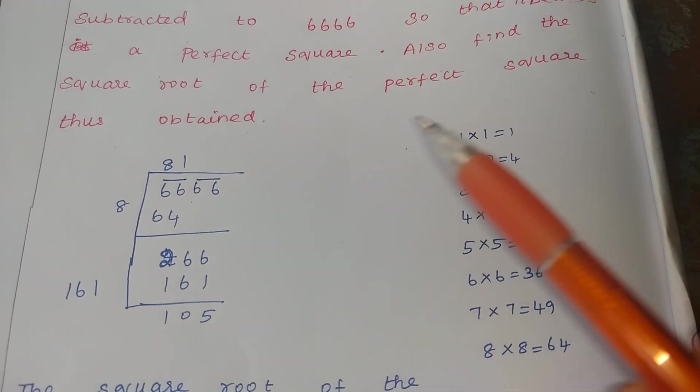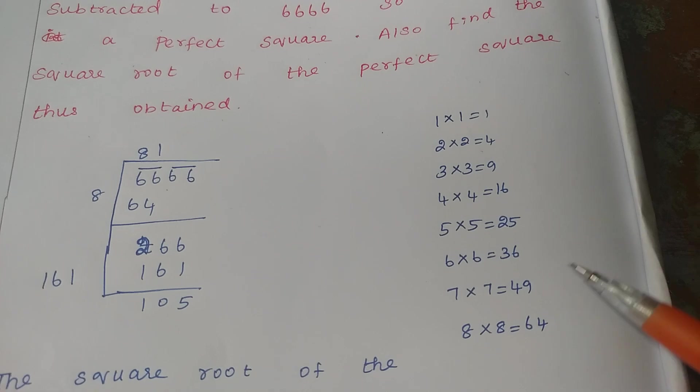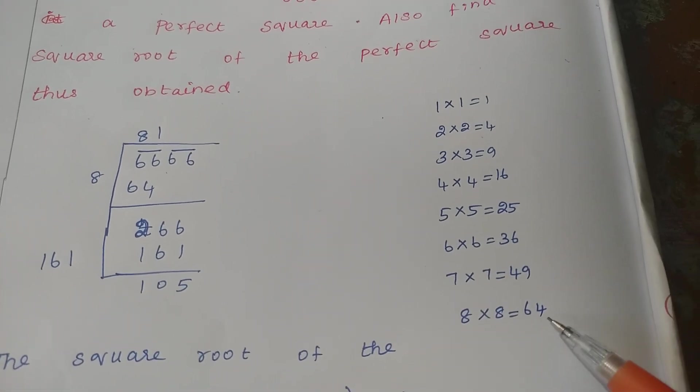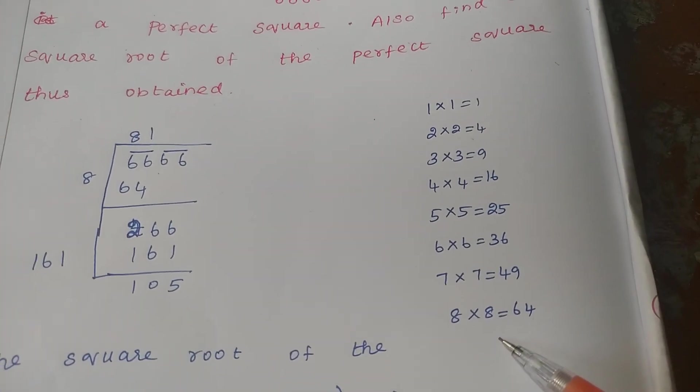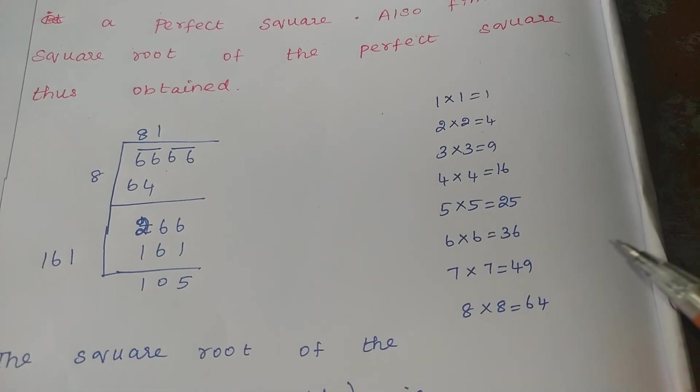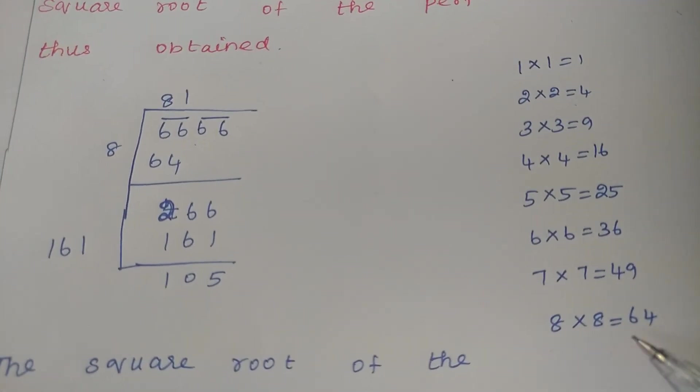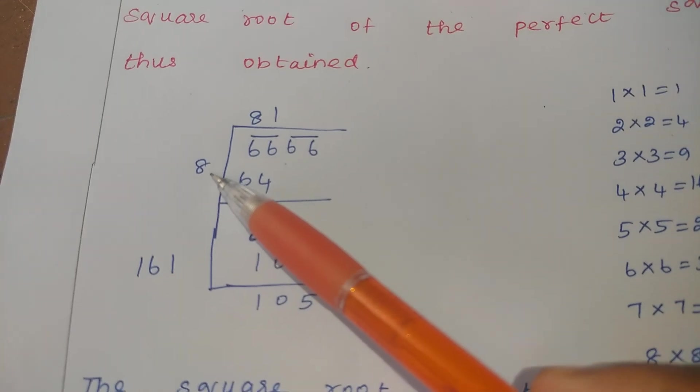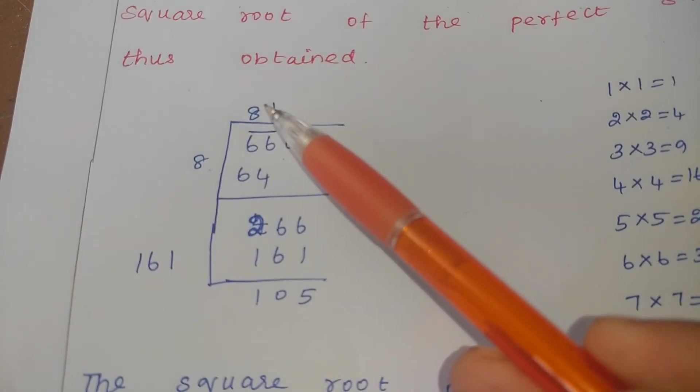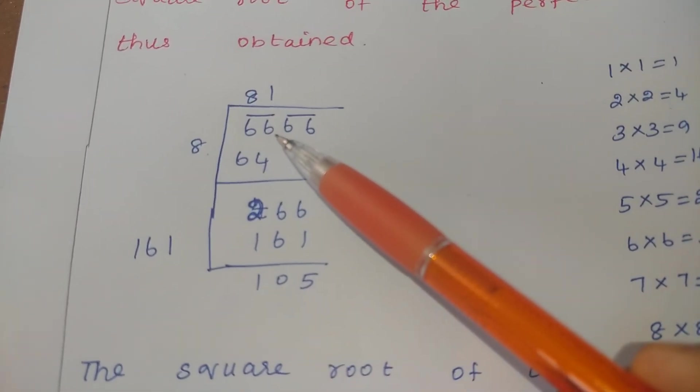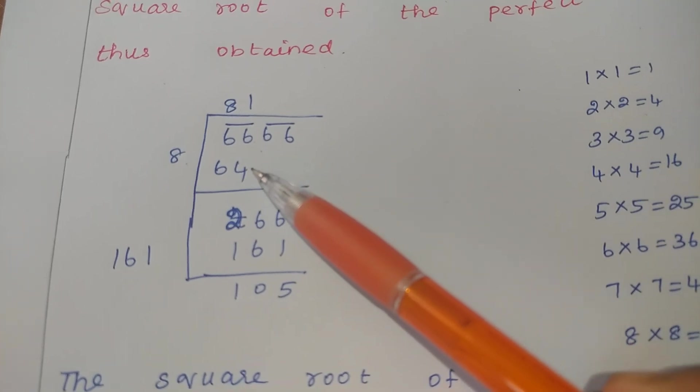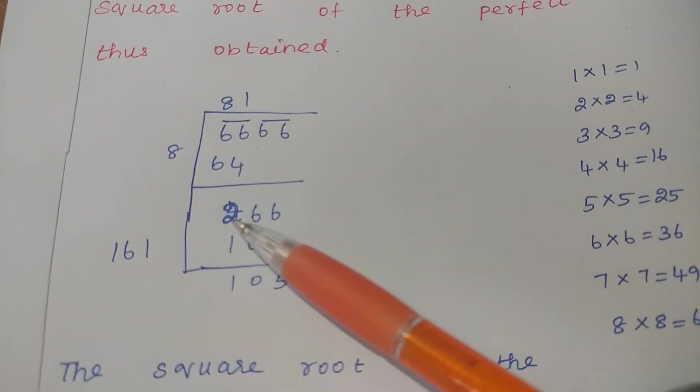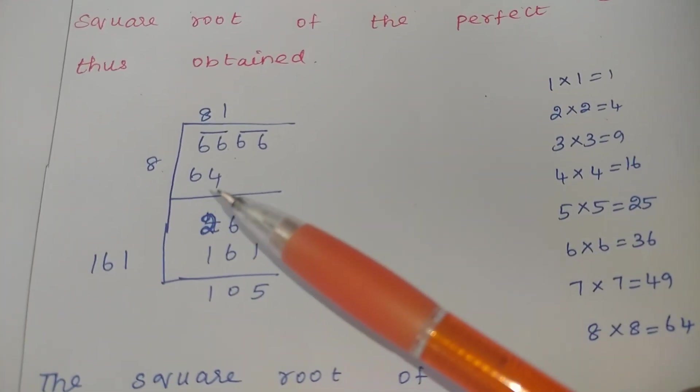Now, here 66. 66 is evaluated. So 7s are 49, 8 8s are 64, 9 9s are what will come? 81. The value is more. So we are taking 8 into 8. 8 into 8 what? 64. So here 1 8, here 1 8. So 8 8s are 64. Now I am going to subtract. 66 minus 64. If you subtract, you get the answer 2. Clear?